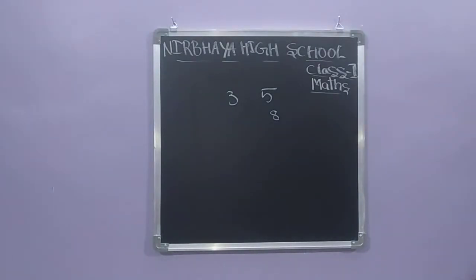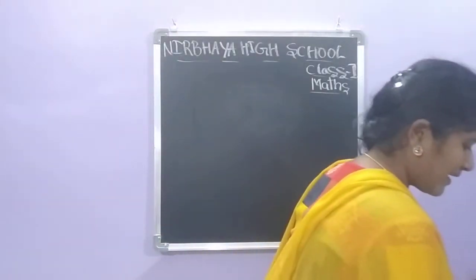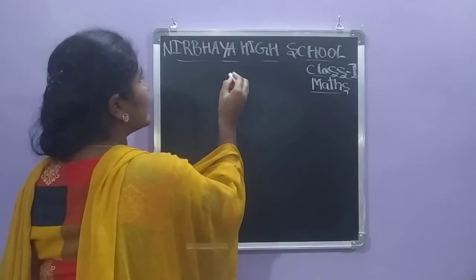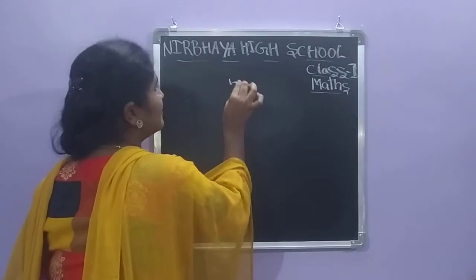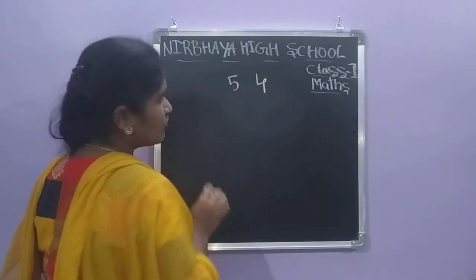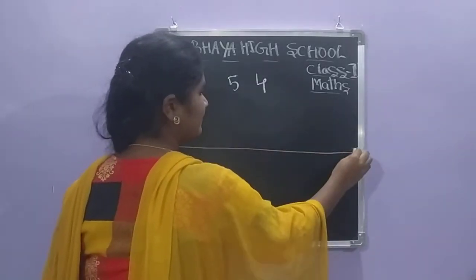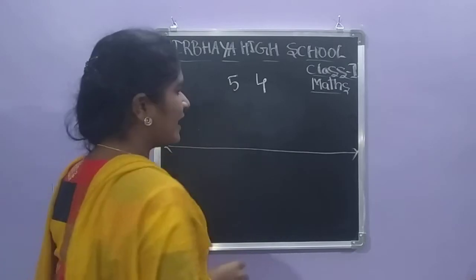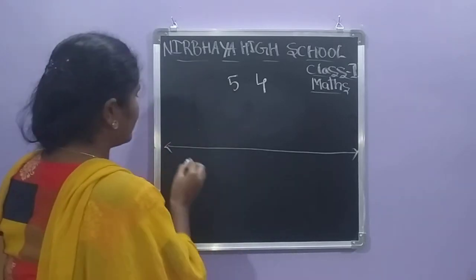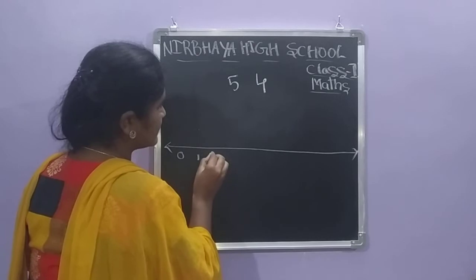What is the next method? The next method is the number line method. See the example: five plus four. How should we do this using the number line method? First we draw a line and write the numbers from zero to ten.